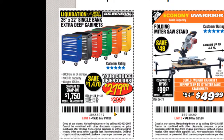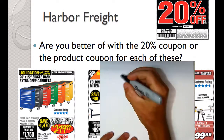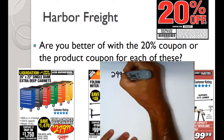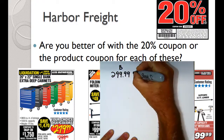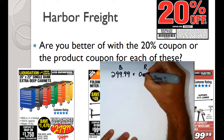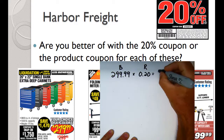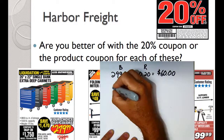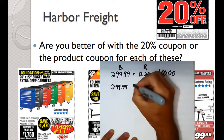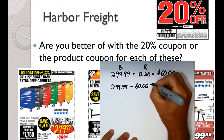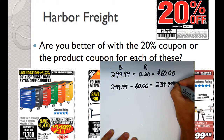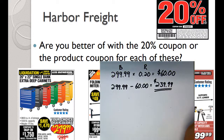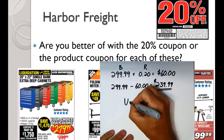The first item is a tool cabinet regularly priced at $299.99, on sale for $279.99. Using the 20% off coupon: $299.99 × 0.20 = $60.00, so we'd pay $299.99 − $60.00 = $239.99. That's a better deal than the store's coupon at $279.99, so here we should use the 20% off coupon.